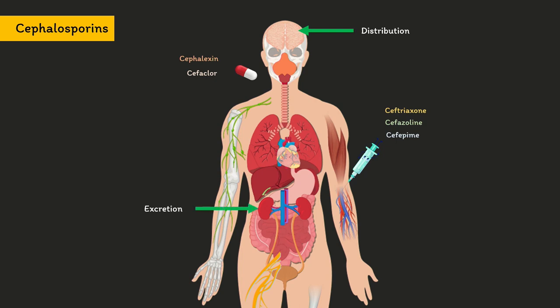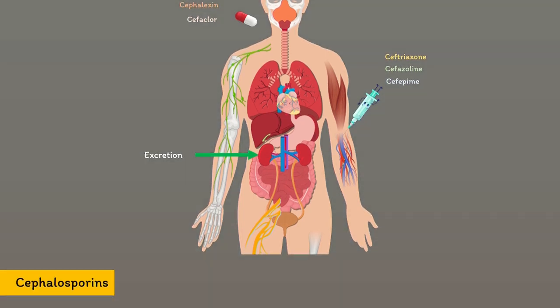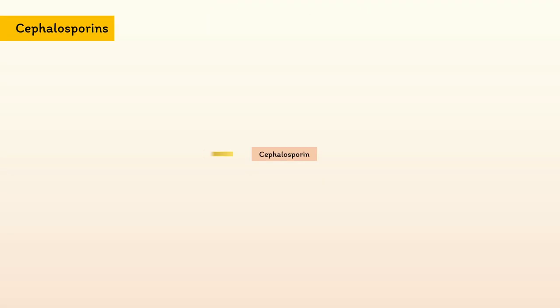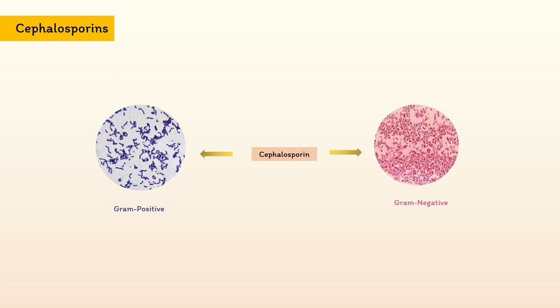Remember that most cephalosporins are excreted renally. They are active against gram-positive organisms, and succeeding generations have activity against gram-negative bacteria as well, including Pseudomonas. The antibiotic may be used for patients who are allergic to penicillin due to the different beta-lactam antibiotic structure.